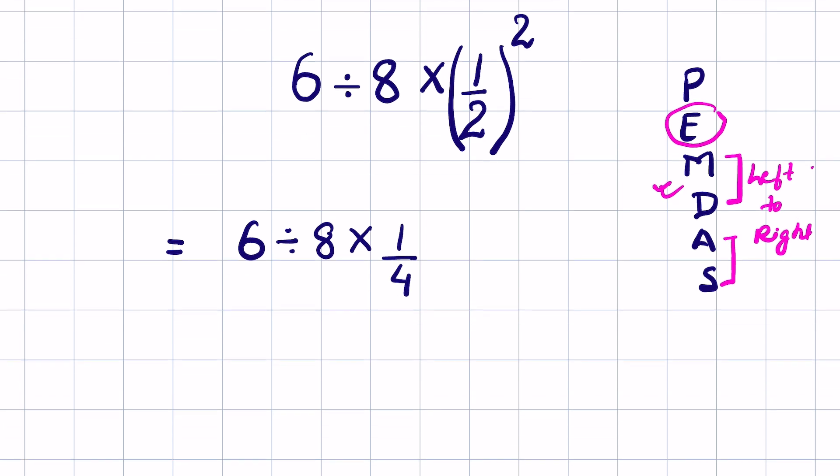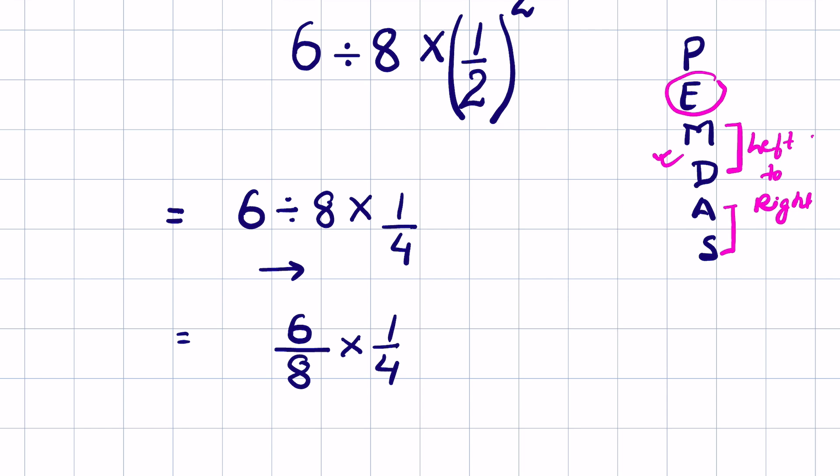So it will be 6 upon 8, then times 1 upon 4. Now you can divide the fractions: 2 times 2 is 4 and 2 times 3 is 6. So the answer is 3 upon 16.